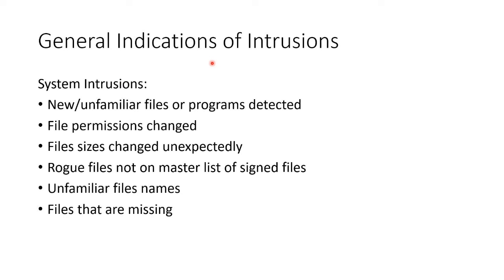General indicators of an intrusion include new or unfamiliar files or programs being detected, file permissions that are changing, file sizes changing unexpectedly, rogue files not on a master list of approved or digitally signed files, files with unfamiliar names, or files that have gone missing.